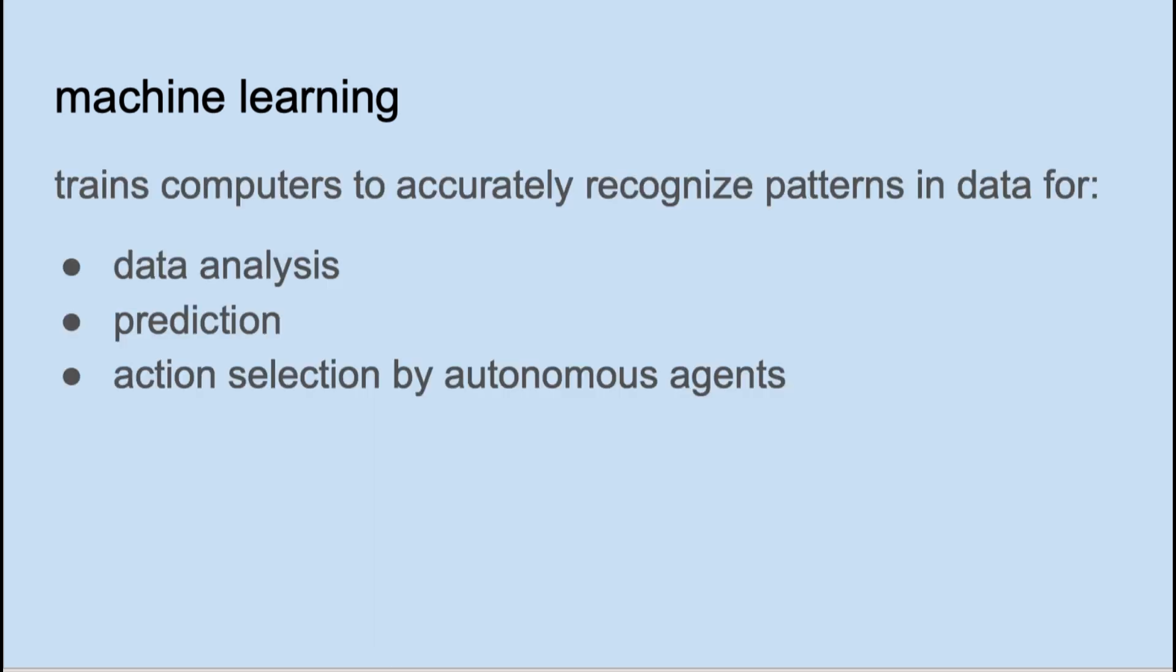There are many definitions of machine learning. Here's mine. Machine learning trains computers to accurately recognize patterns in data for data analysis, prediction, or action selection by autonomous agents.